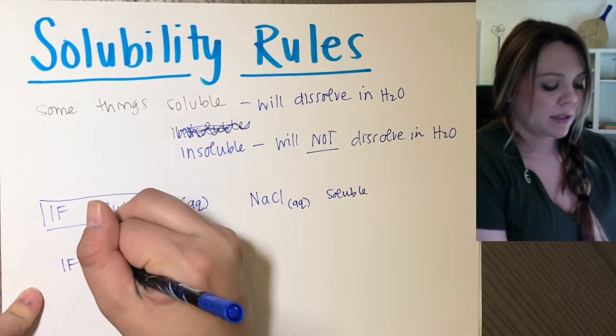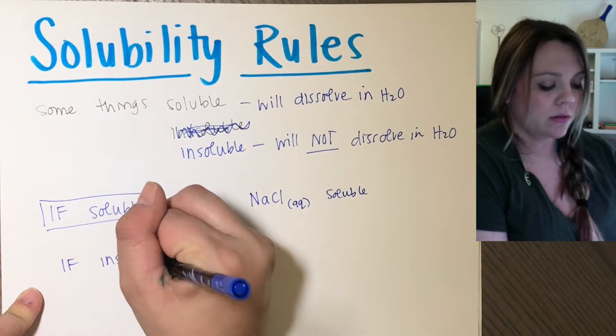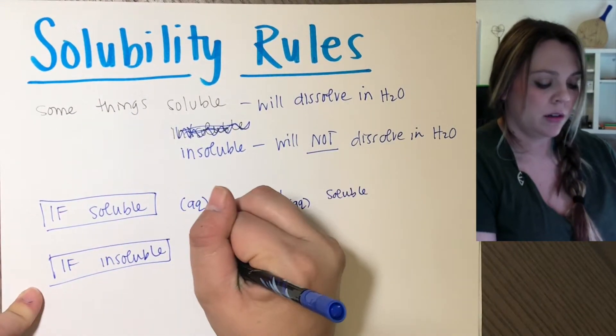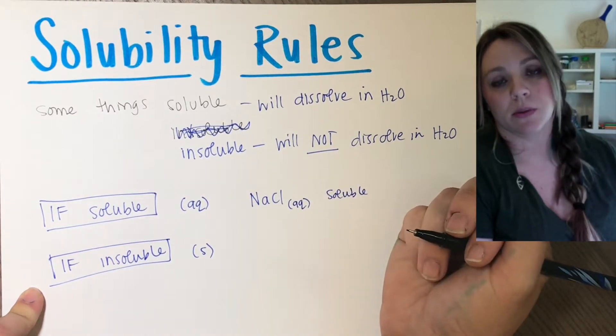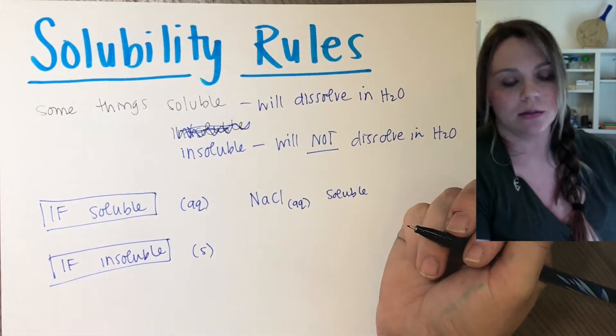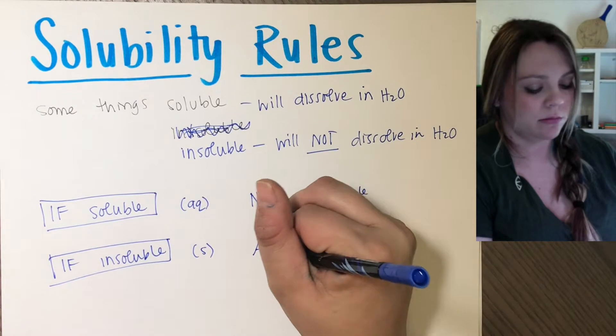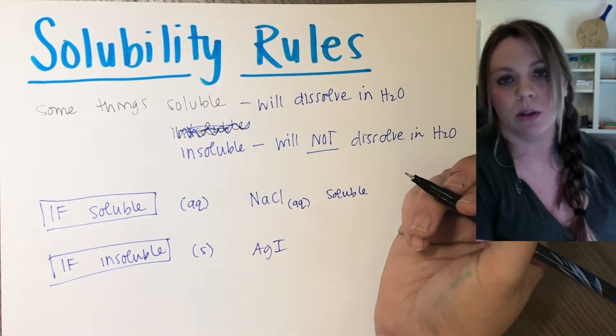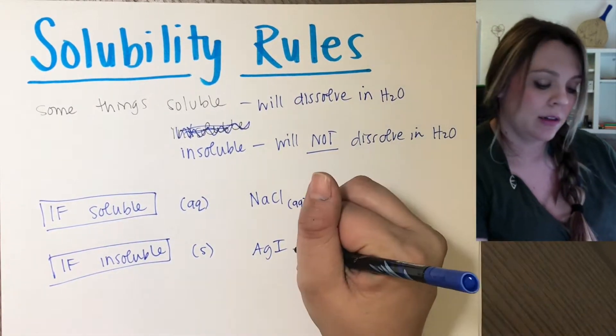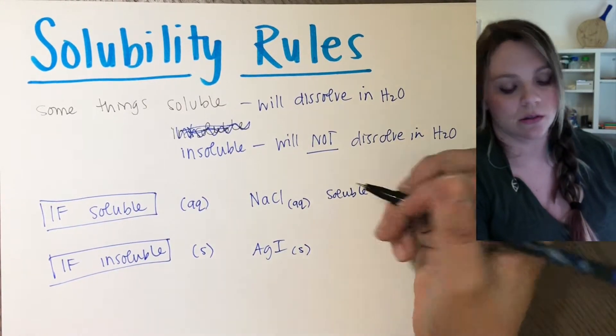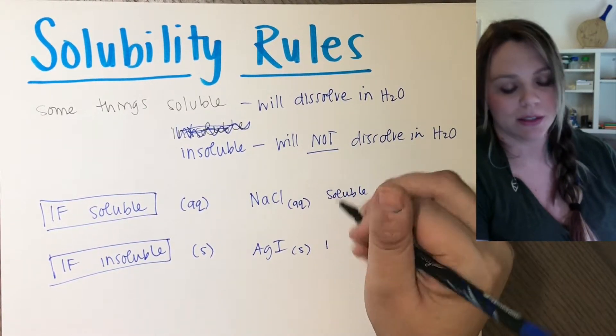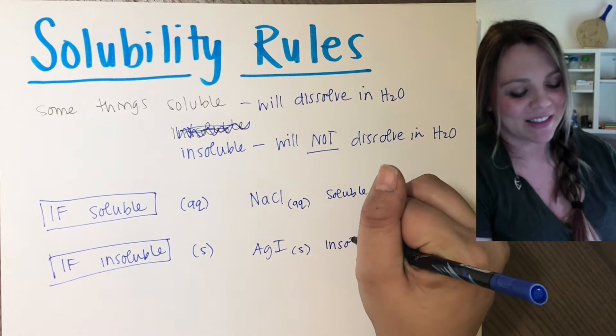If your substance is insoluble, meaning it will not dissolve, it's going to have a little parenthesis with an S, meaning it's still solid. So silver iodide will not dissolve in water if you put it in there. It is still a solid. That tells me it's insoluble.